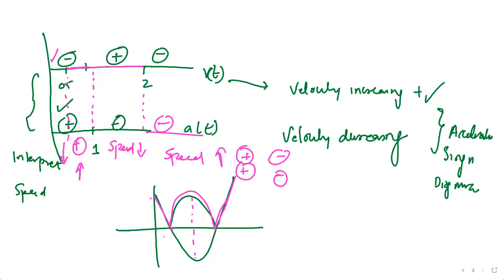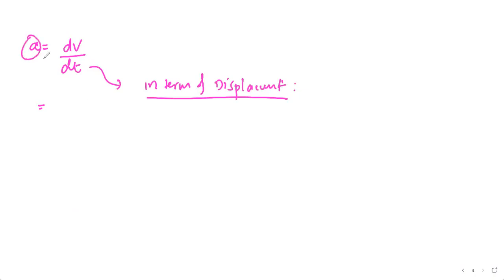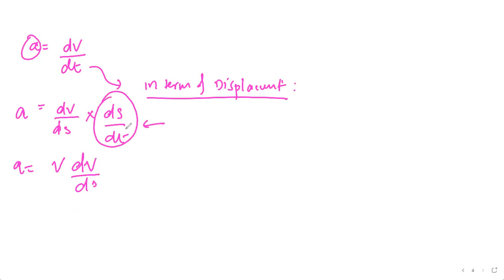One very important relation used in problem solving: acceleration is dv/dt, but sometimes we need acceleration in terms of displacement. Using the chain rule: a = dv/dt = (dv/ds)(ds/dt) = v · dv/ds, since ds/dt is velocity. This is one of the most important results — acceleration equals v · dv/ds.